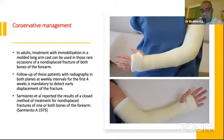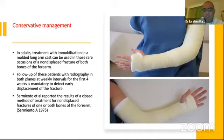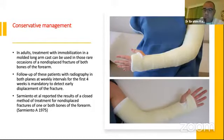Conservative management in adults is rarely indicated, but can be used with immobilization in a molded long arm cast in rare occasions of non-displaced fractures of both bones of the forearm. Follow-up should be close — every week especially during the first four weeks — to detect any early displacement. Sarmento in 1975 reported a good series of patients treated with manipulation and casting of non-displaced forearm fractures.